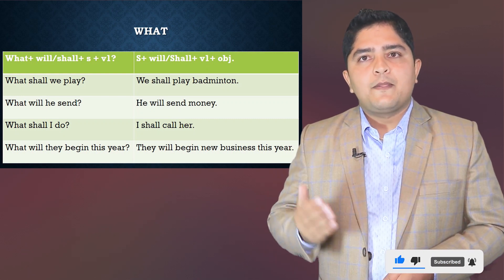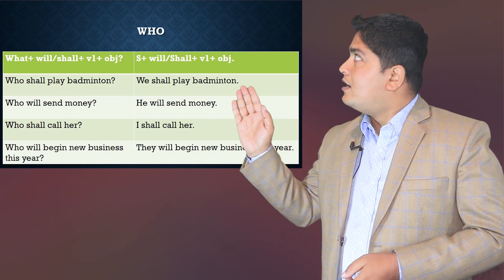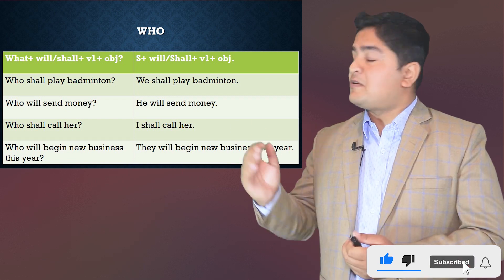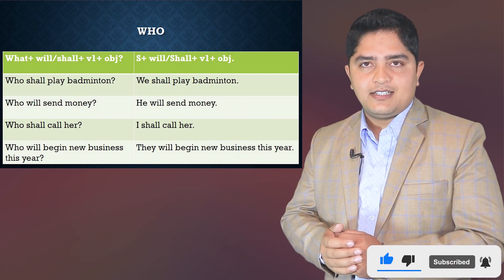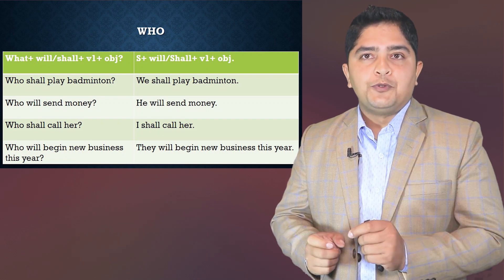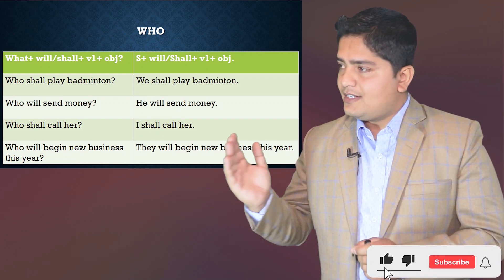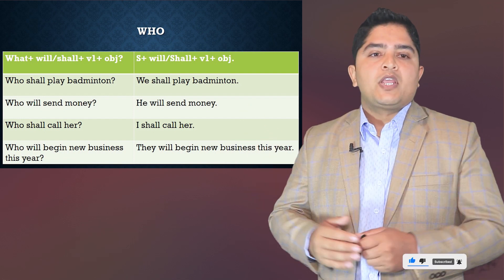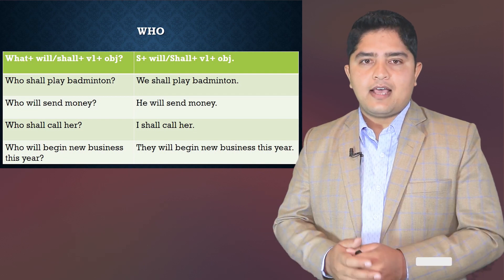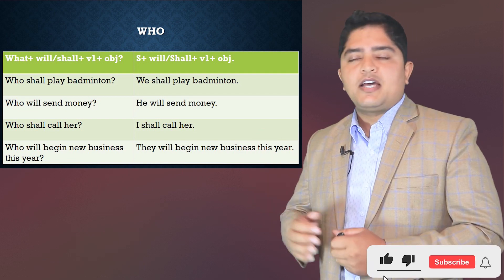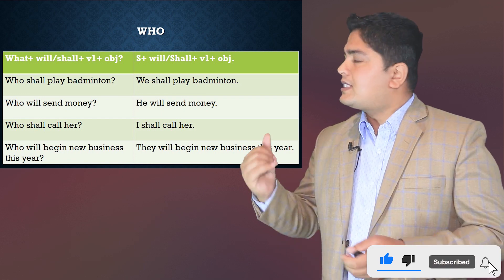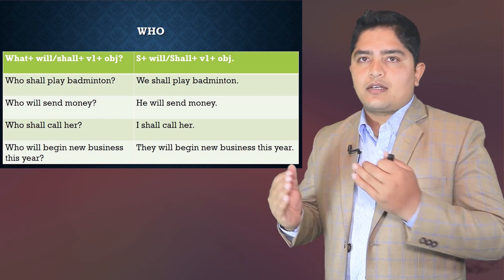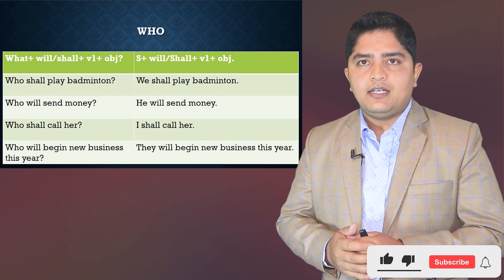The next one is 'who.' With 'who' questions, it is very easy — 'who' itself acts as the subject in the question. For example: 'Who shall play badminton?' — answer: 'We shall play badminton.' And 'Who will send money?' — answer: 'He will send money.'